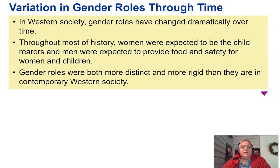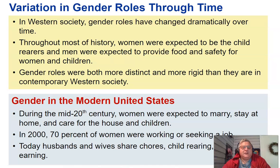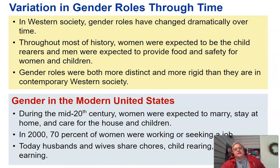In western society, gender roles have changed dramatically over time. Throughout most of history, women were expected to be the child-rearers and men were expected to provide food and safety for women and children. Gender roles were both distinct and more rigid than they are in contemporary western society. During the mid-20th century, women were expected to marry, stay at home, and care for the house and children. By 2000, 70 percent of women were working or seeking a job, and today husbands and wives tend to share child-rearing and wage-earning.